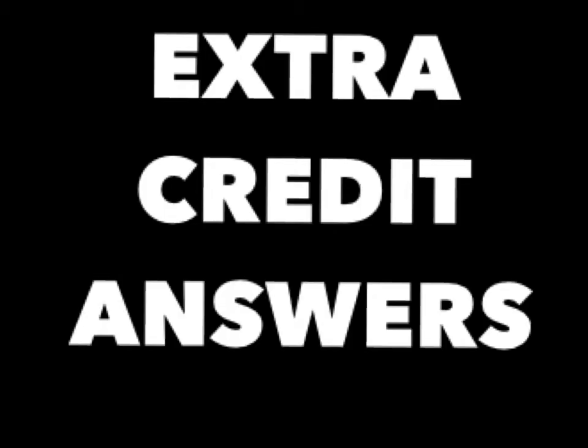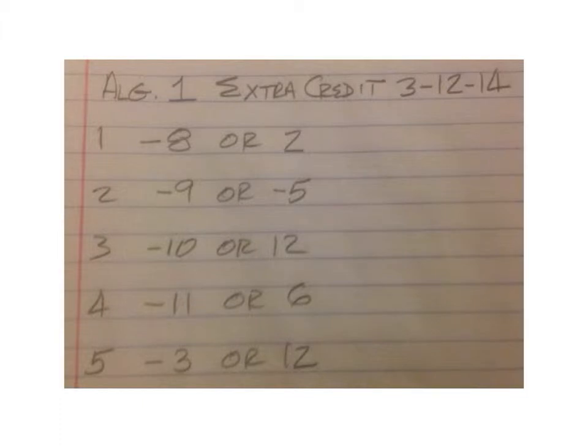The following are extra credit answers for the assignment that was given as extra credit with the previous homework assignment. Extra credit answers are for number 1, negative 8 or 2. Number 2 is negative 9 or negative 5. Number 3 is negative 10 or 12. Number 4 is negative 11 or 6. And number 5 is negative 3 or 12. These are two points each.